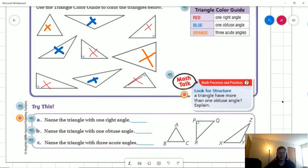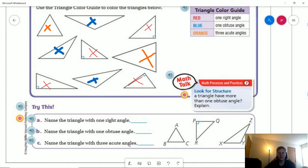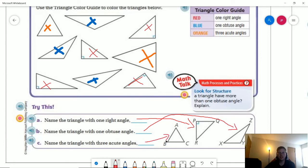Down at the bottom, name the triangle with one right angle. So that would be our one that has the little box here. So that would be this guy. The one with the obtuse angle would be our far one. And the one with three acute angles would be this one.